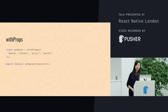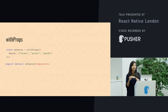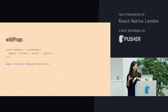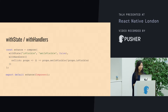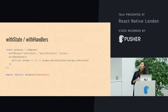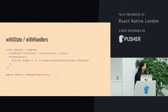Recompose also has a bunch of other utility functions. WithProps lets you pass extra data to your original component. WithState and WithHandlers work together — WithState allows you to have internal state for your component rather than global state using the Redux store.